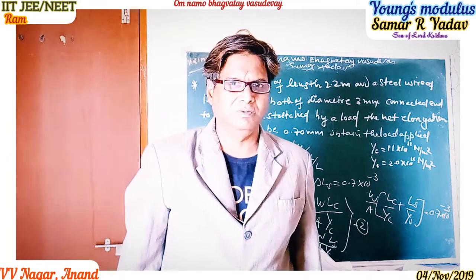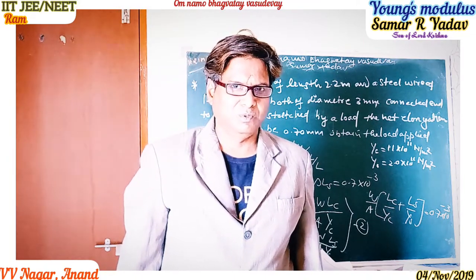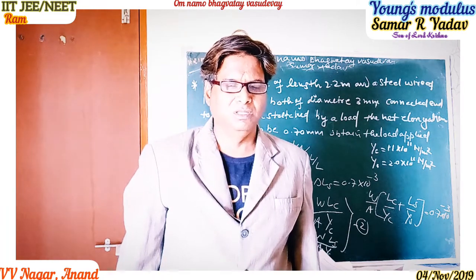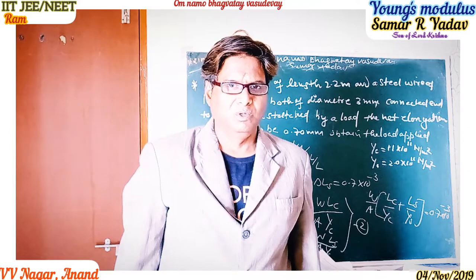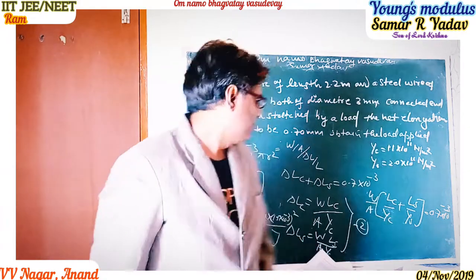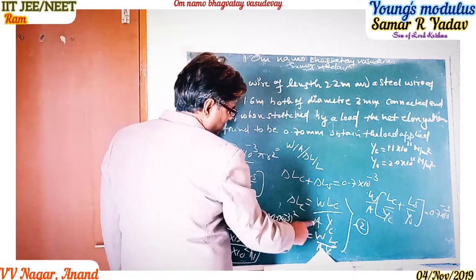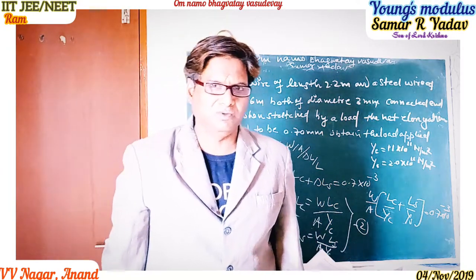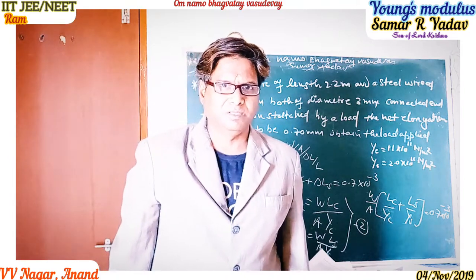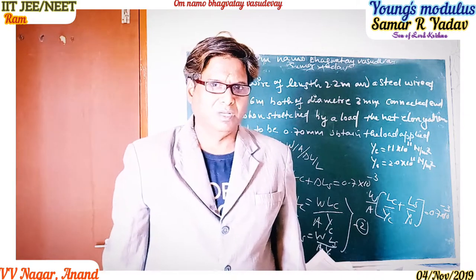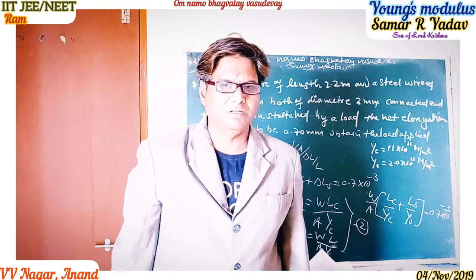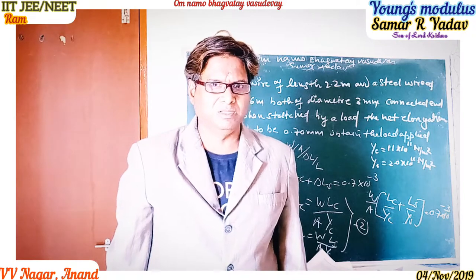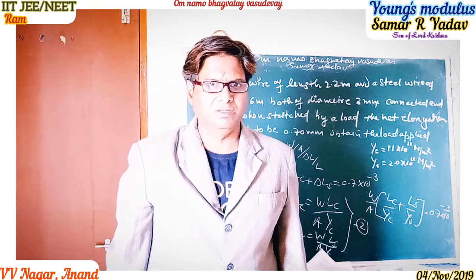Substituting all values, we get W equals 1.8 into 10^2 Newtons. We also calculate the individual elongations: delta L_c equals 5 into 10^(-4) meters, and for steel, delta L_s equals 2 into 10^(-4) meters. Adding both gives 0.7 into 10^(-3) meters, or 7 into 10^(-4) meters, confirming the result. Finally, W equals 1.8 into 10^2 Newtons.